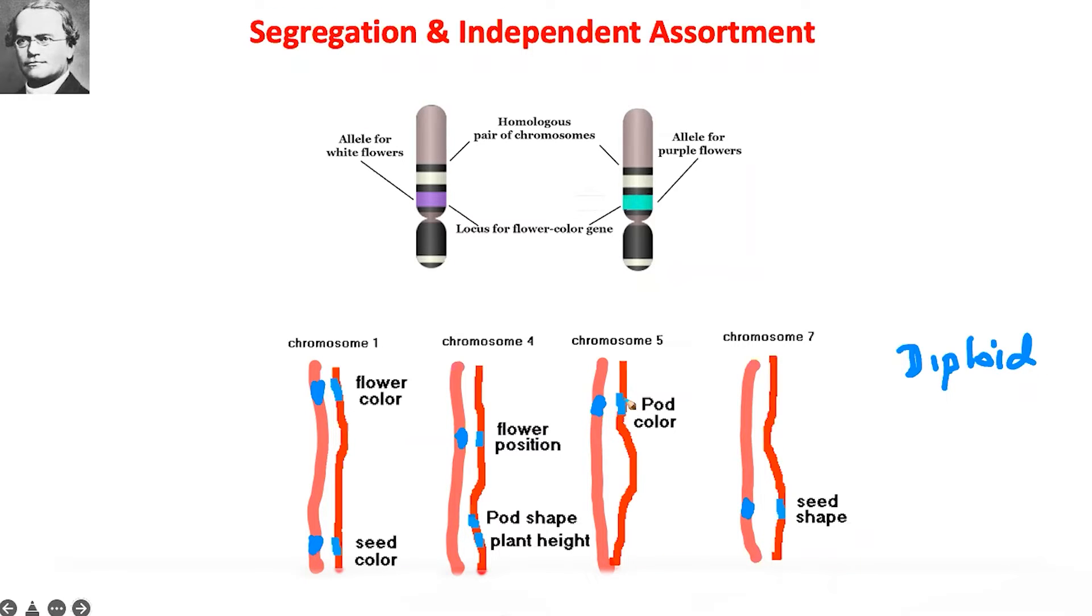Pea plant, like us, is a diploid organism and these two alleles segregate when gametes are made. The gene responsible for pod color and the gene responsible for seed shape assort completely independently of each other in the Mendelian process.